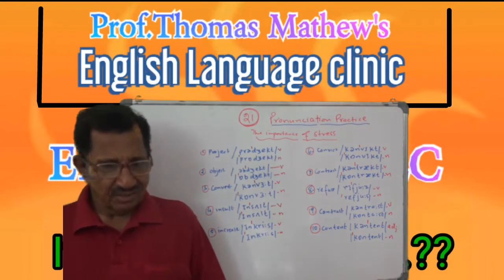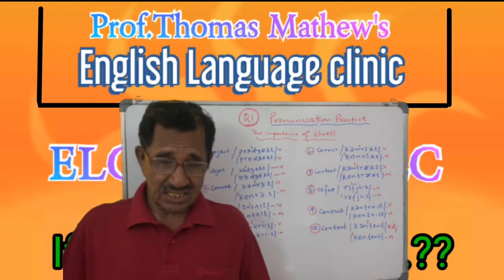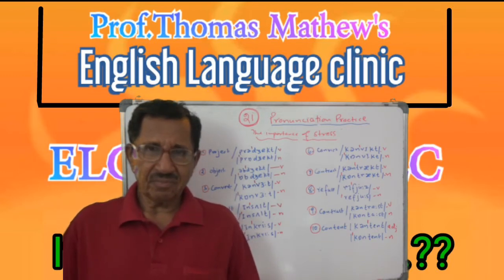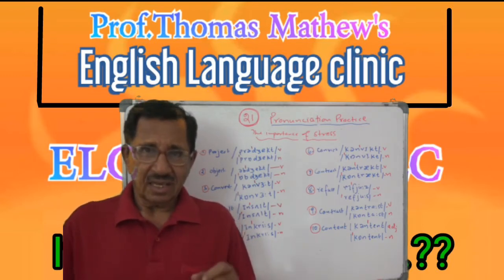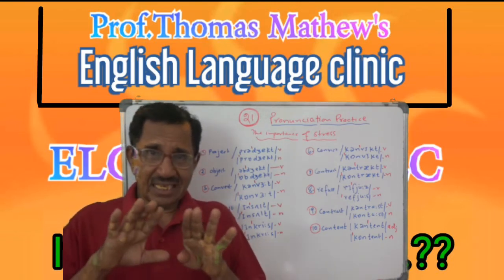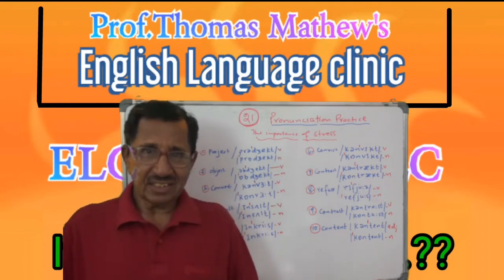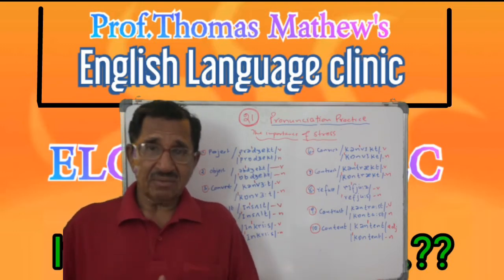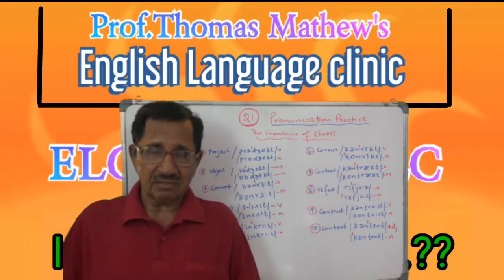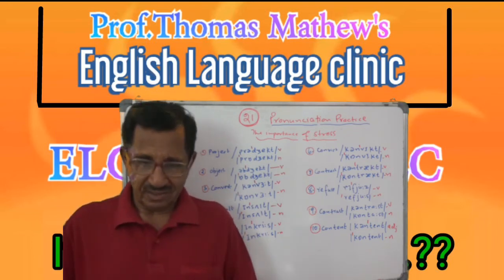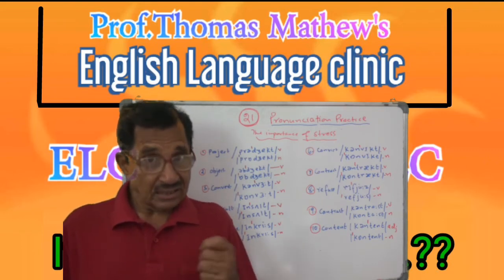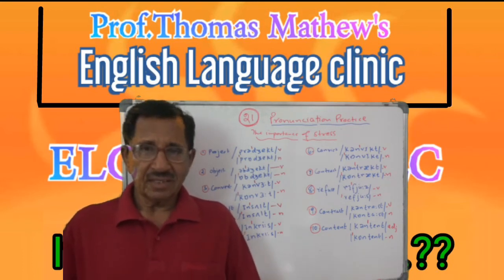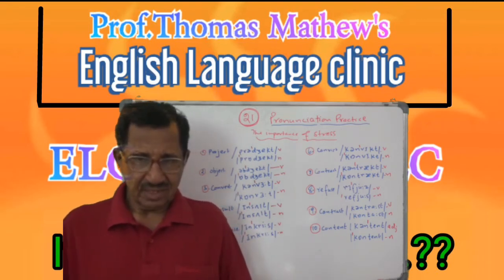And the next one is 'contrast.' The noun is 'contrast.' 'Contrast' is the act of comparing to show difference. I 'contrast' my last age mark with this age mark — it means I compare to find the difference. There is a 'contrast' between myself and my friend — there is a visible contrast, meaning difference.